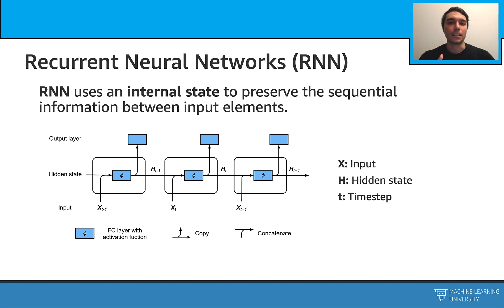Let's see how an RNN works. An RNN unit takes the input and the previous hidden state, and it applies an activation function on this. After the activation function, we produce a hidden state. Then we can use this hidden state to produce an output. The important thing is that this updated hidden state is going to go to the next unit. The next unit takes this hidden state, and again takes the input, and applies the same processes.